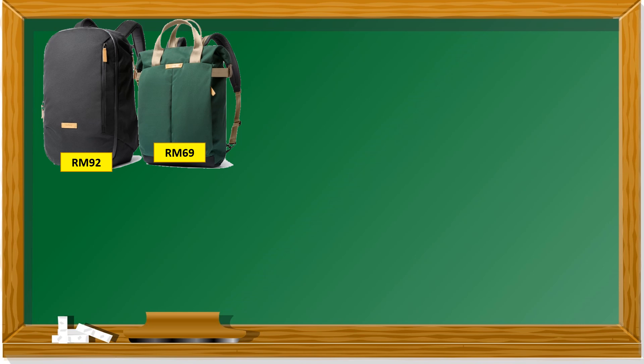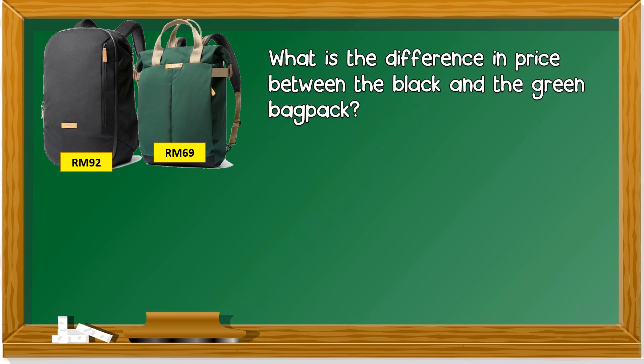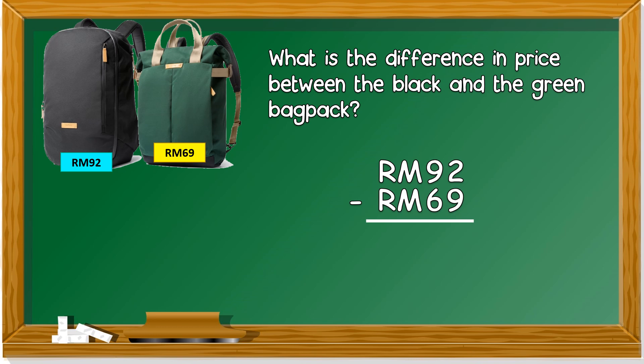Let's take a look at this situation. What are these? These are bags. The black bag costs 92 ringgit and the green bag costs 69 ringgit. What is the difference in price between the black and the green backpack? Remember, we have learned the keyword 'difference' — beza — so it involves subtraction. The difference means we get the larger value minus the smaller value.